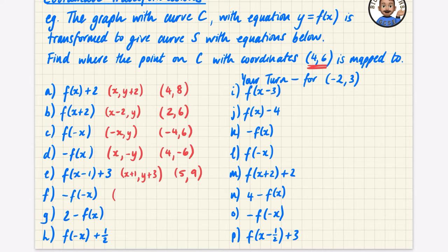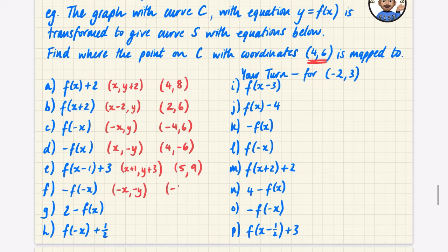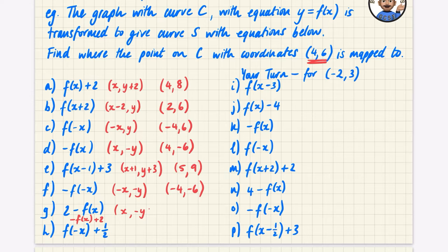This one is a double reflection — a reflection in both the x-axis and the y-axis. If it was previously (x, y) it's now going to be (-x, -y), so (4, 6) becomes (-4, -6). The next one I would rewrite as -f(x) + 2, which means the y coordinate is negated and then 2 is added to it. So x stays the same, y becomes -6, then adding 2 gives -4. The point maps to (4, -4).